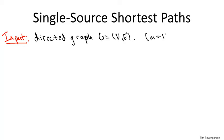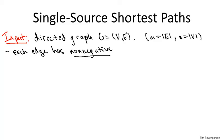The input also includes two extra ingredients. First of all, for each edge E, we're given as input a non-negative length, which I'll denote by L sub E. In the context of a driving directions application, L sub E could denote the mileage — how long this particular road is — or it could also denote the expected travel time along the edge.